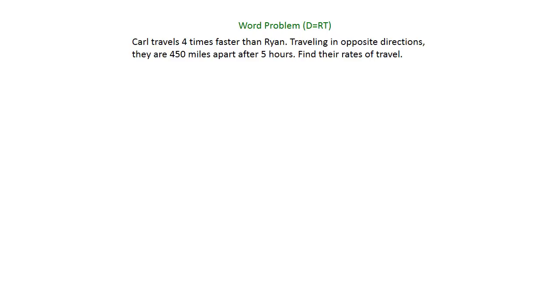In this example, we're going to solve a system of equations to work out a word problem. The first thing you want to do with any word problem is read it and see what you're doing. Carl's traveling four times faster than Ryan, they're traveling in opposite directions, and it's asking us to find their rates of travel.